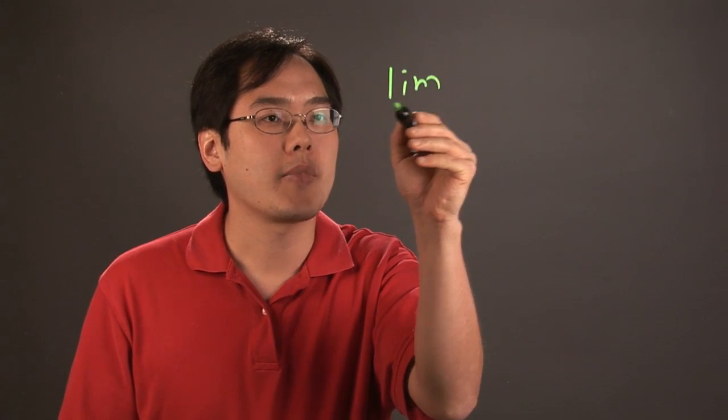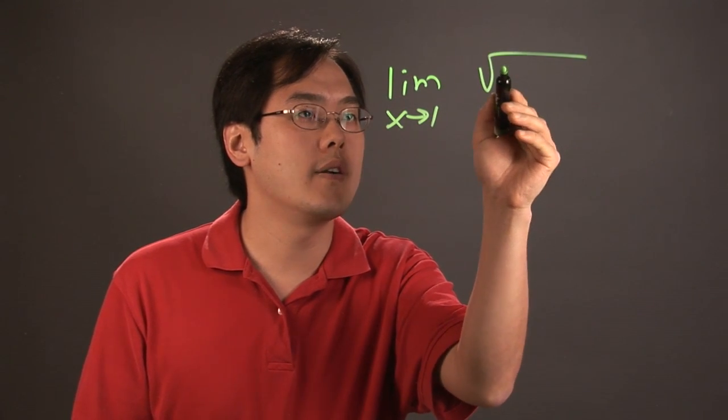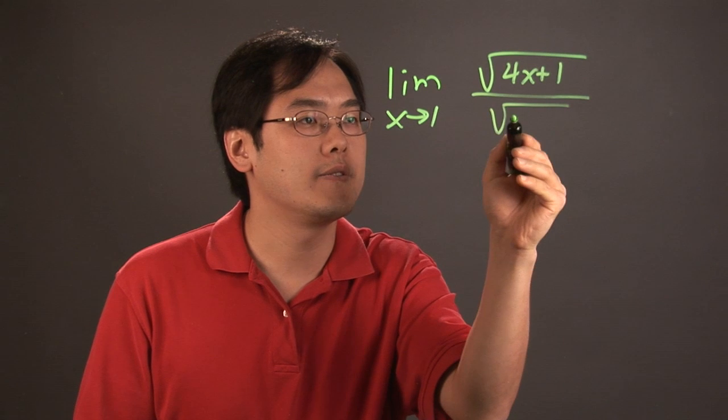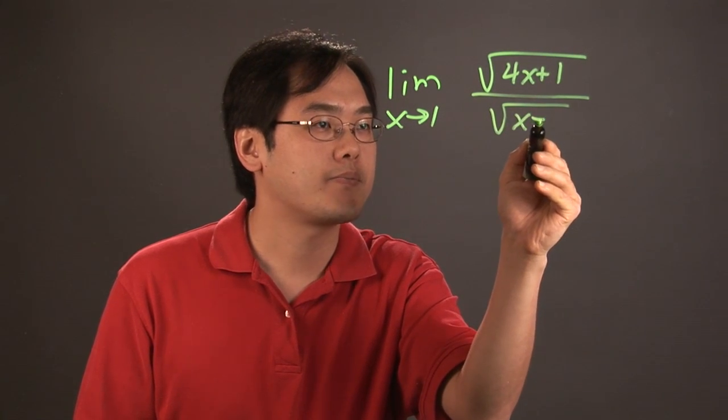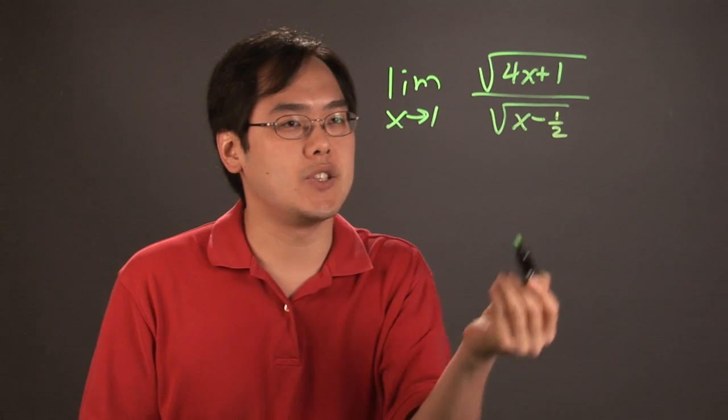So let's say you want to find the limit as x approaches 1 of square root of 4x plus 1 over square root of x minus 1 half.